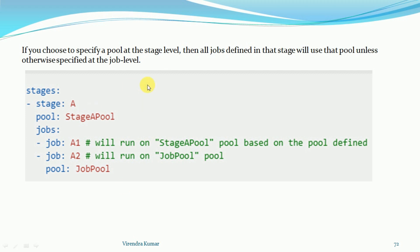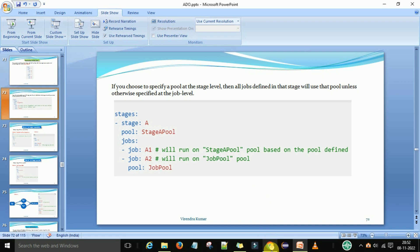On my screen you can see we have two agents — one agent at the stage level and one agent at the job level. If you choose to specify a pool at the stage level, then all the jobs defined in that stage will use that pool, unless we define a pool at the job level. So for job A2 I have defined the job-level pool, so that job will run on the job pool. But for a single job, it will take the stage pool by default.